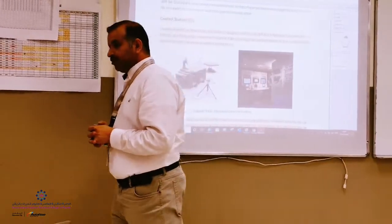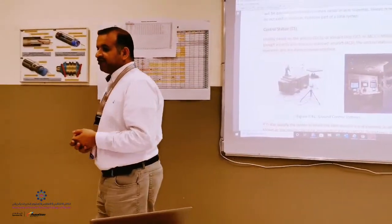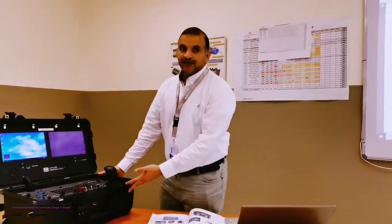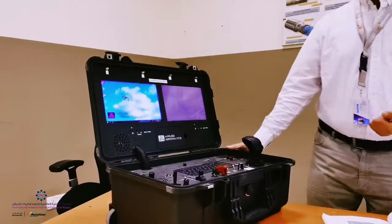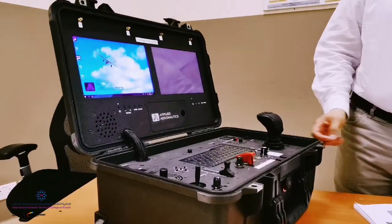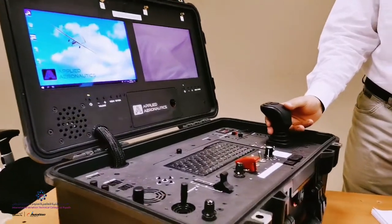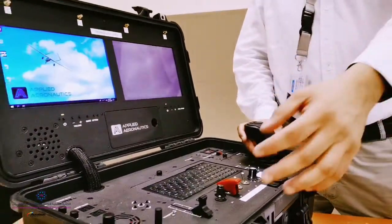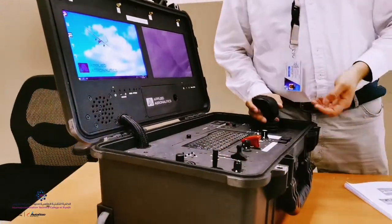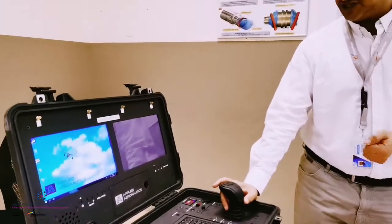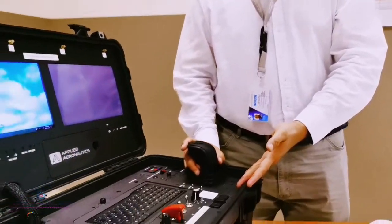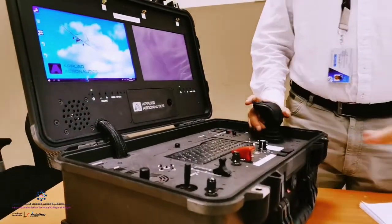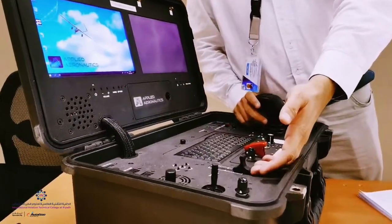Simple UAVs and mid-range UAVs will have control stations like this, which have many features to control the systems through a control stick for flight control systems and a control stick to control the payload, camera, sensor, and different features. Trim tabs are provided in this control station also, plus engine advance throttle.